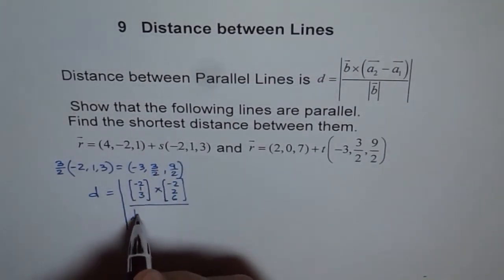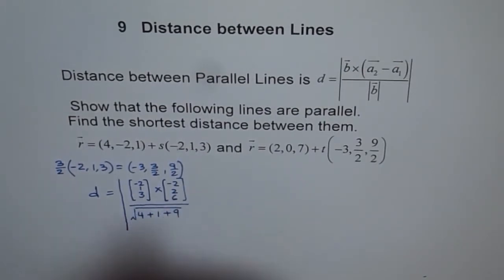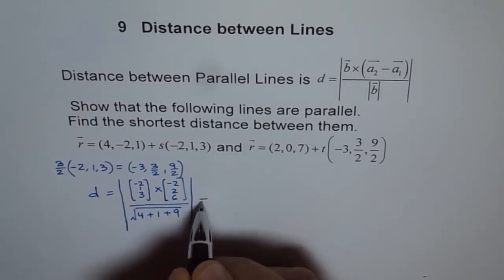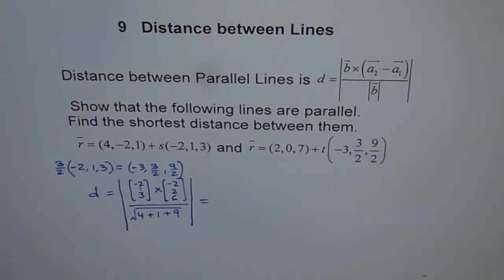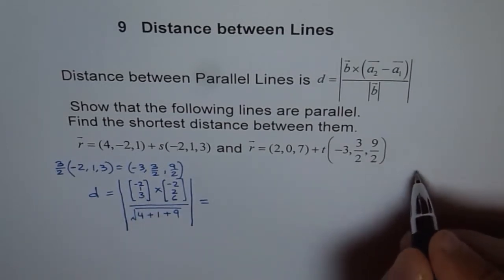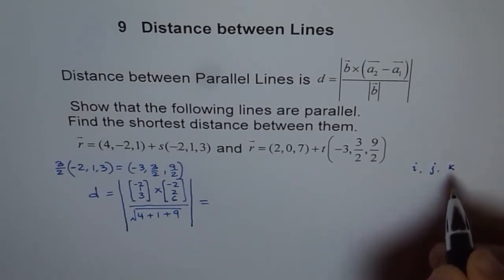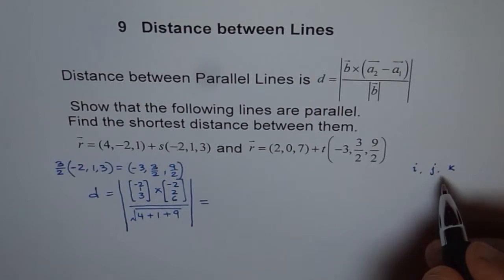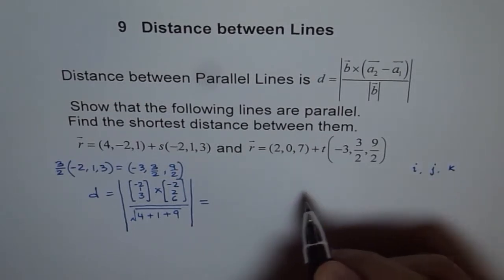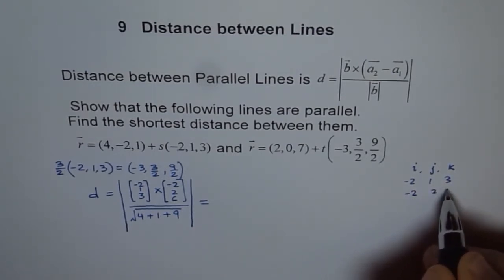The magnitude of b is: minus 2 squared is 4, plus 1 squared is 1, and 3 squared is 9. Now, let me compute the cross product separately. We get the determinant with i, j, k over the row minus 2, 1, 3 and the row minus 2, 2, 6.